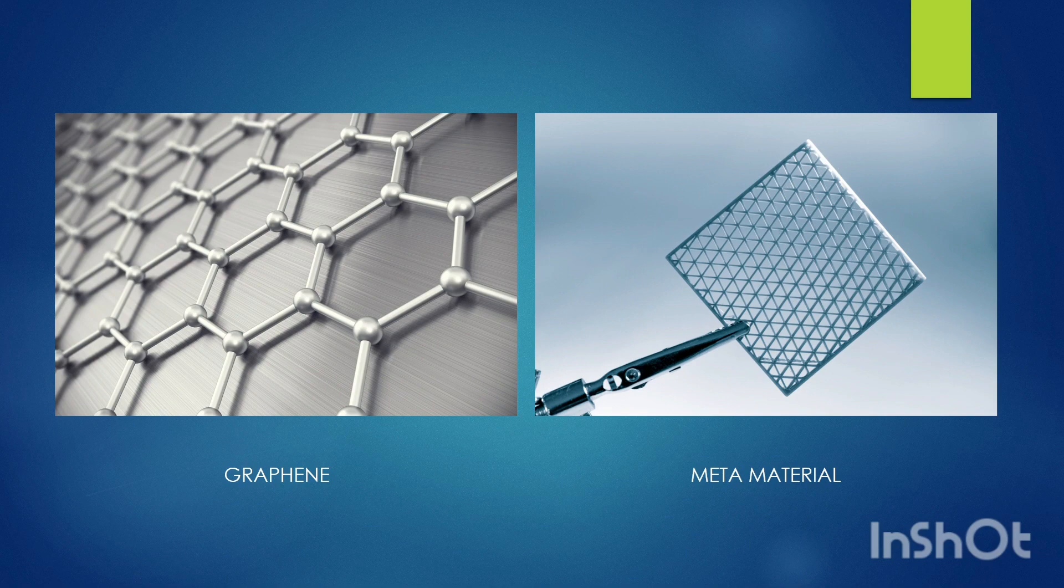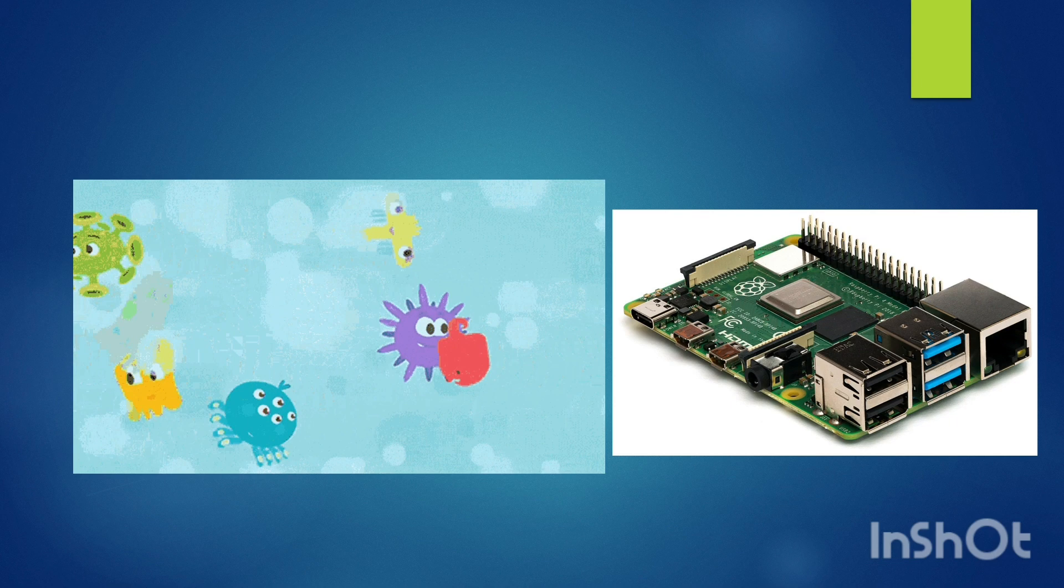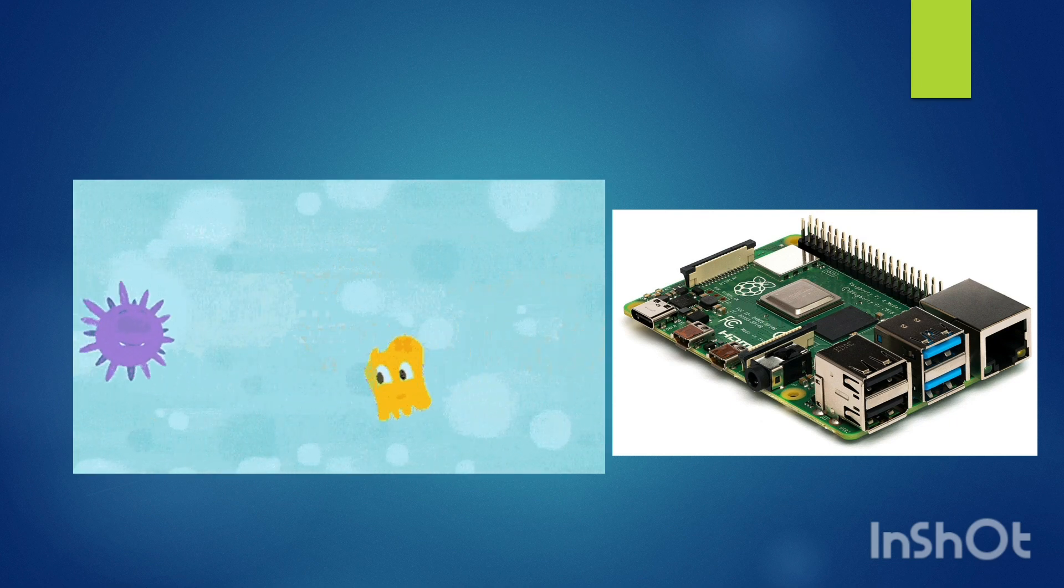Unlike nanothings, which are made up of synthesized artificial materials such as graphene and other metamaterials that may be harmful to the environment and human body, bio-nanothings use living biological cells to transmit information.